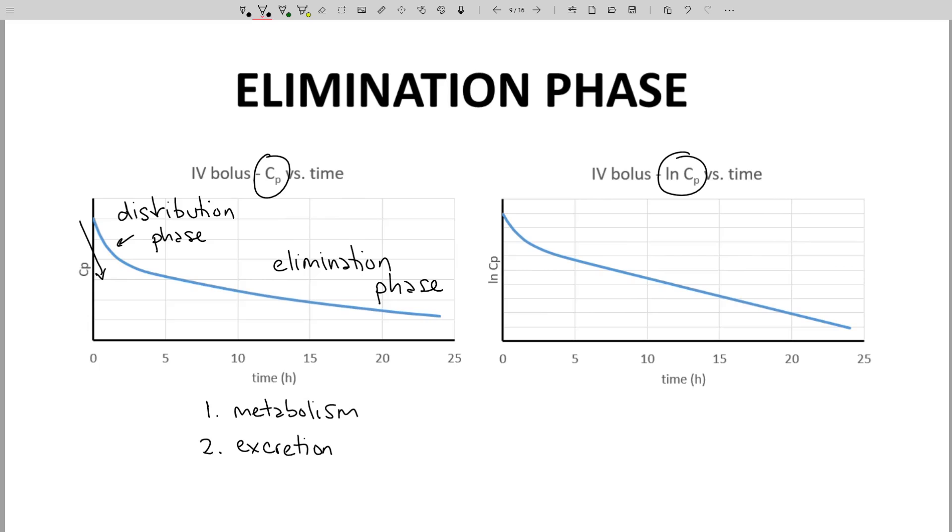Both metabolism and excretion lead to drug clearance and cause elimination. When we go to the natural log CP time curve, we see that the elimination phase is essentially linear except for the short distribution phase.